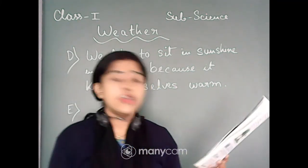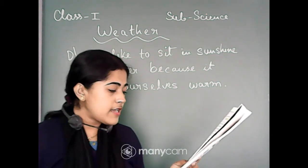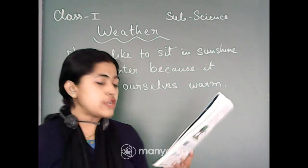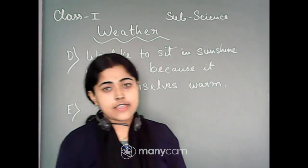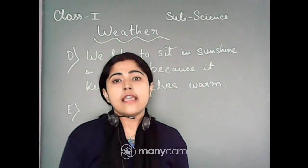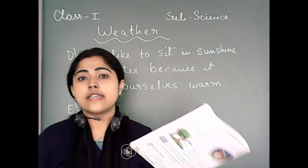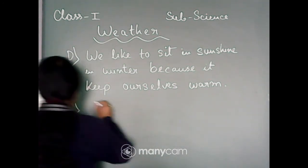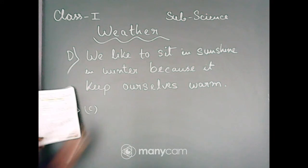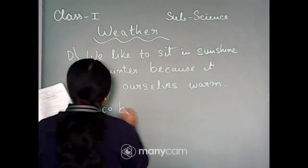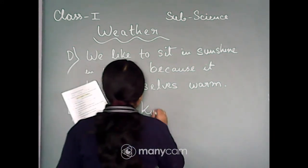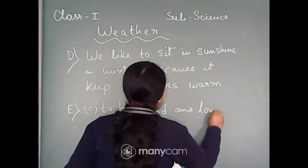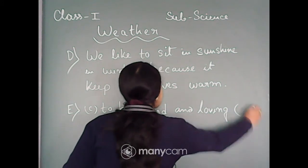First option: to be honest and polite. Second option: to be selfish and greedy. Third option: to be kind and loving. Since Rohit helps the poor person, he is very kind and loving. So the correct option is option C — to be kind and loving.